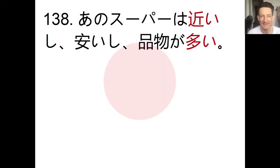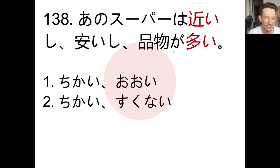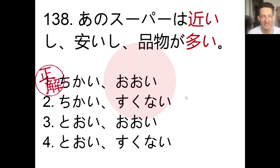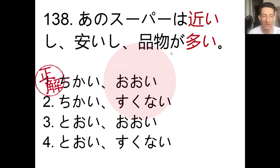We'll get started with our kanji-based problem. Number 138: we have to choose the correct hiragana for the highlighted words in the sentence. Pause the video, choose an answer, and we'll check. The answer is: chikai and ooi.